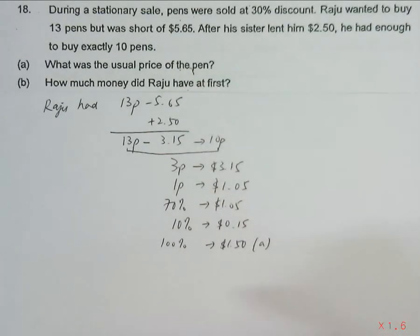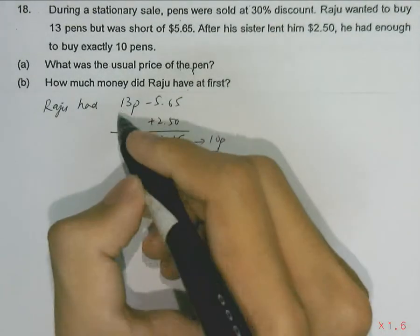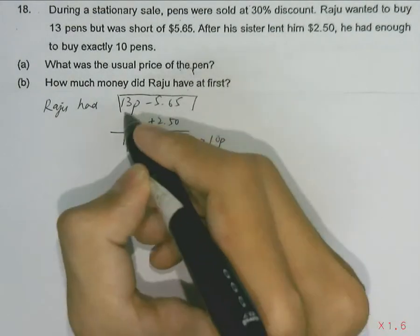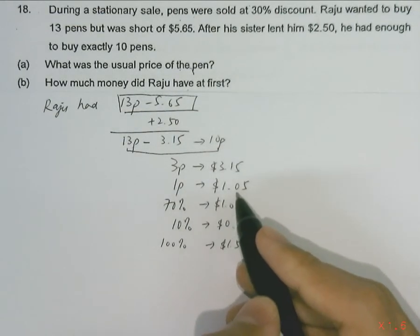Now part B asks how much money did Raju have at first. So Raju had at first 13 pens minus $5.65. Since 1 pen is $1.05,